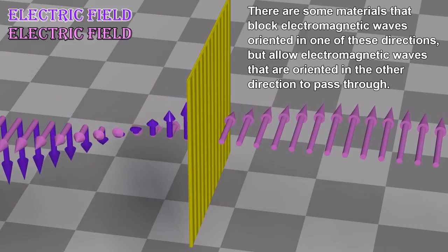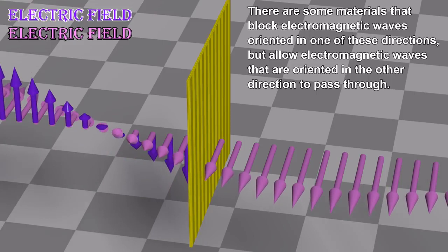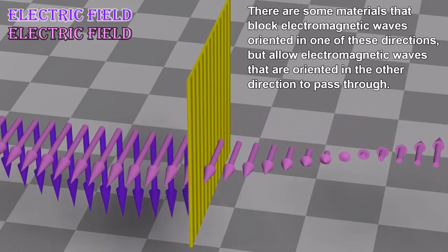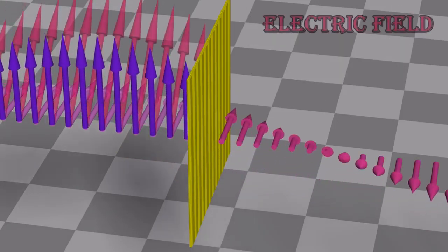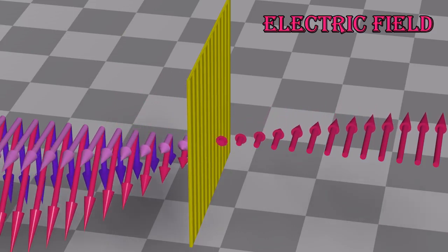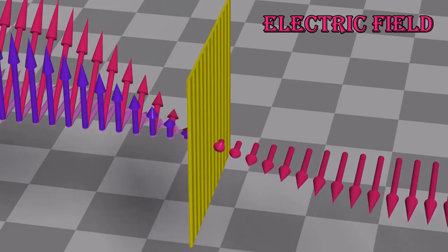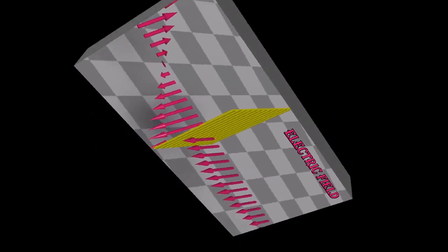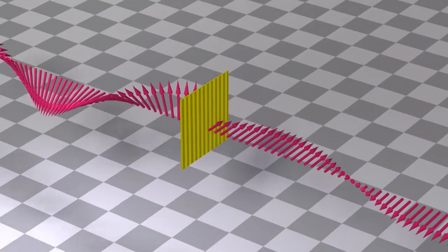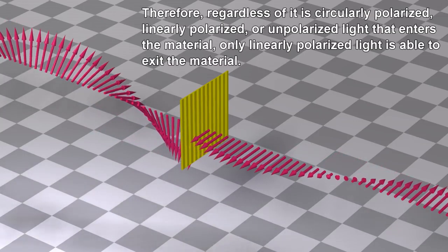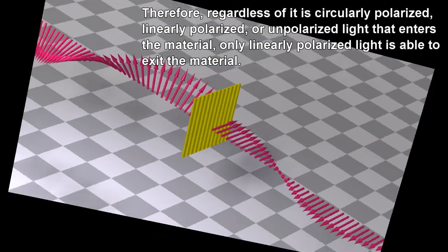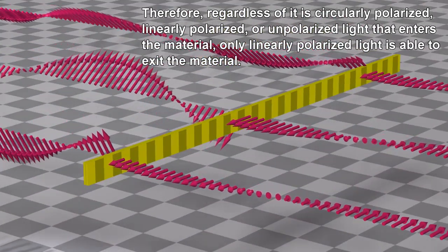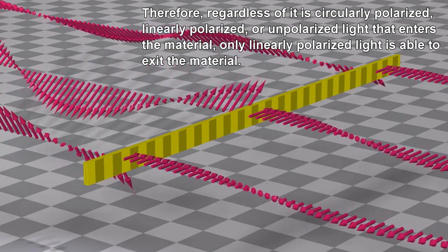There are some materials that block electromagnetic waves oriented in one of these directions, but allow electromagnetic waves that are oriented in the other direction to pass through. Therefore, regardless if it is circularly polarized, linearly polarized, or unpolarized light that enters the material, only linearly polarized light is able to exit the material.